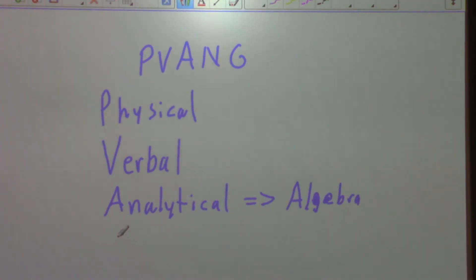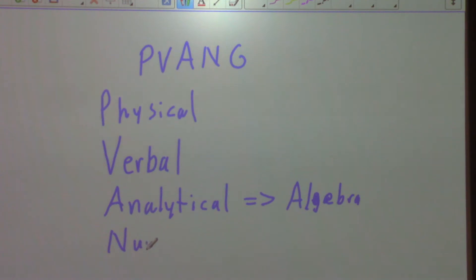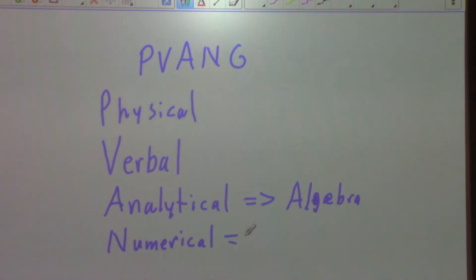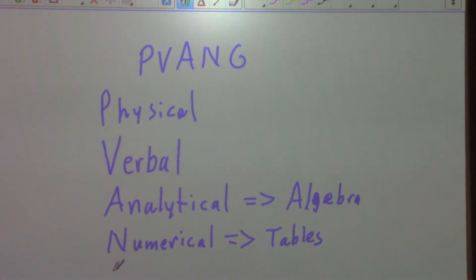And then N represents Numerical. Numerical can be represented as sets of ordered pairs, but usually we see them represented in tables. And finally, G represents Graphical — exactly.